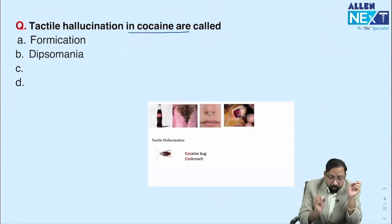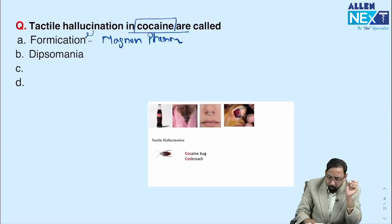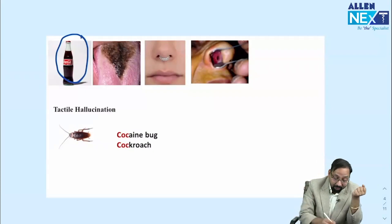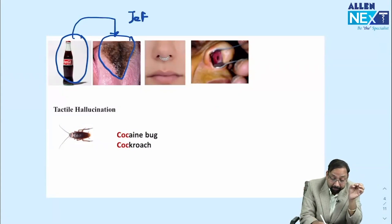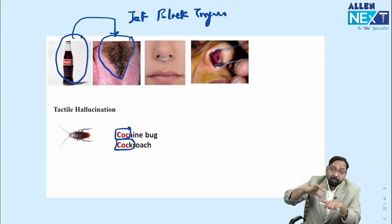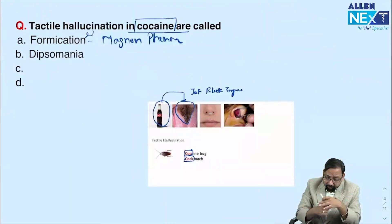Next repeat question: tactile hallucination in cocaine is also called formication, or the Magnus phenomenon. Mnemonic: remember cocaine as coca-cola. If you drink coca-cola very frequently, your tongue would become dark brown — just like the color association. A patient taking cocaine may feel that cocaine bugs or insects are crawling under the skin. This tactile hallucination is called cocaine bug, formication, or the Magnus phenomenon.